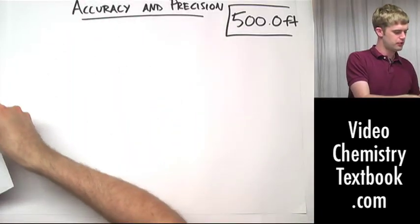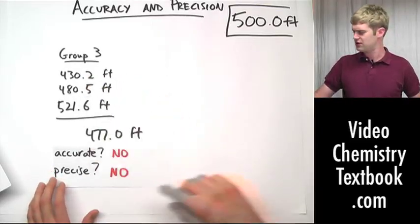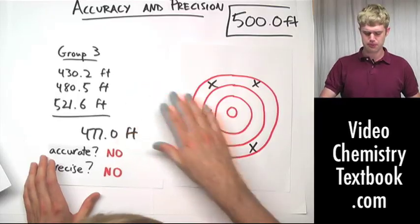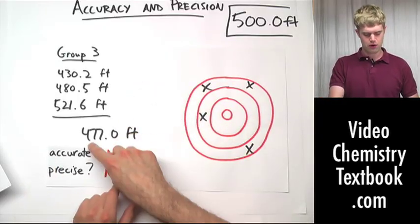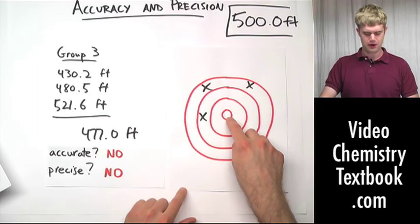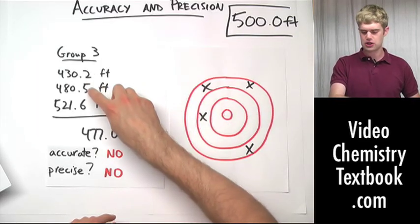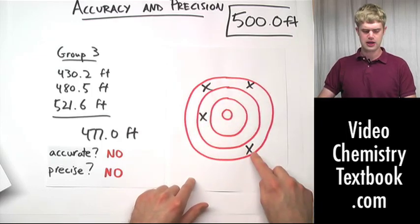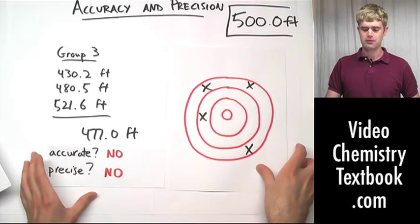And finally, let's look at group three. Group three is kind of all over the place, which we see by the lack of precision—everything from 430 to 521. And we can symbolize it by this bullseye target. Did they hit the bullseye? No. 470, their accuracy was not close. And similarly, their precision, they were all over the place. So this is what a representation of not accurate and not precise for group three would be.